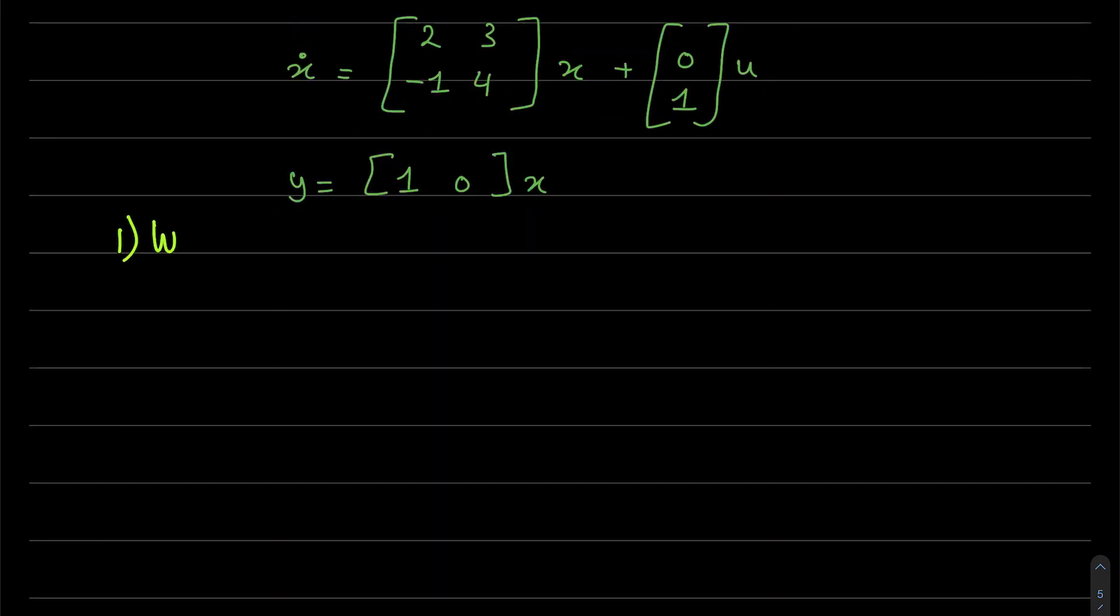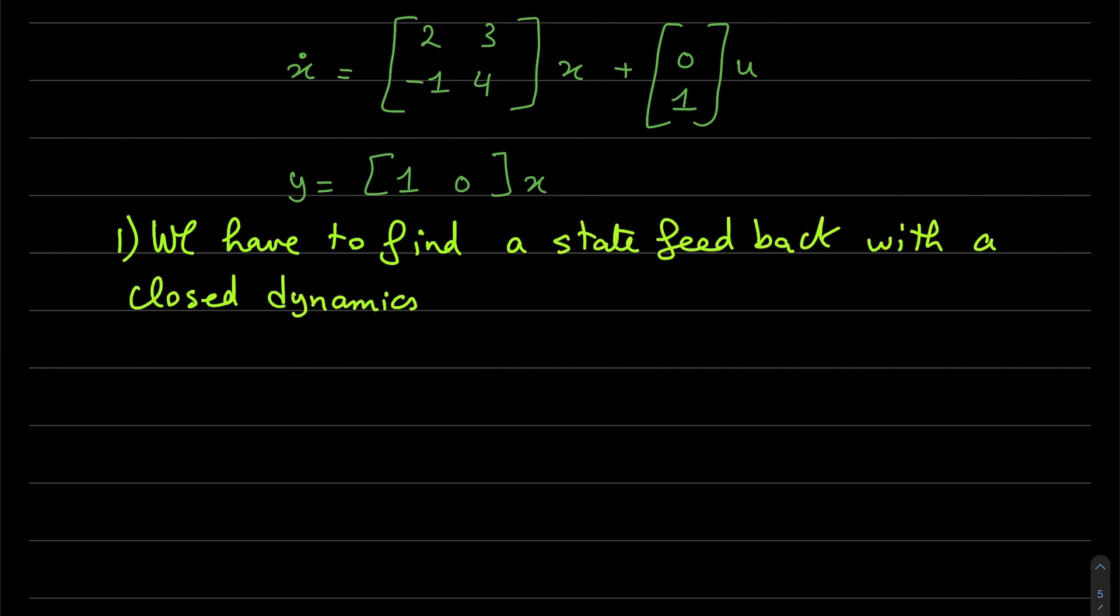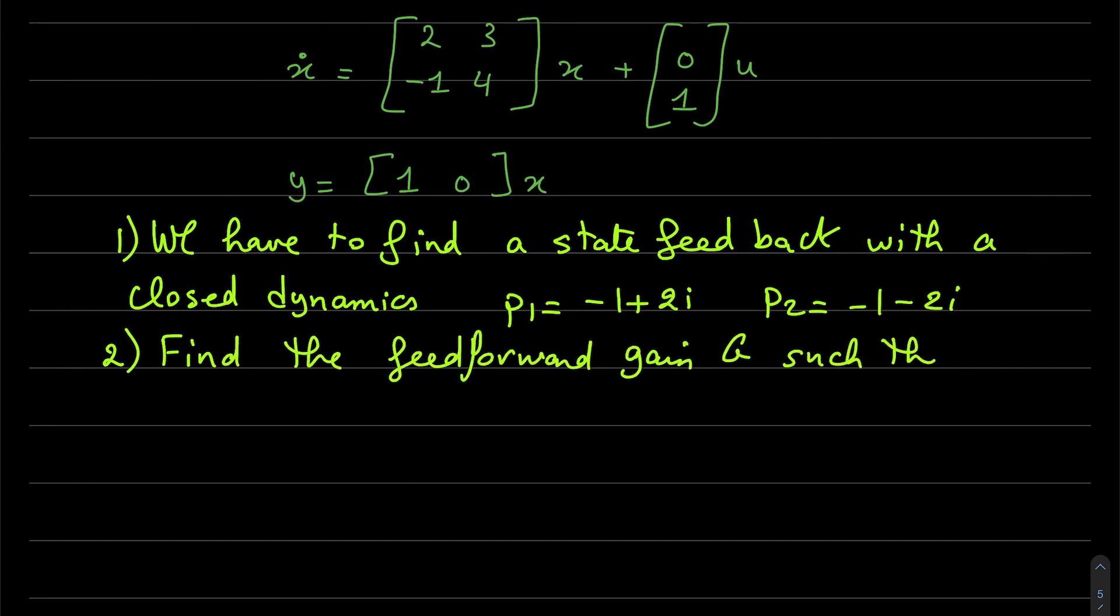Let us return to the example. We have to find a state feedback control with closed dynamics given by these poles, p1 and p2. And in addition, we have to find the feedforward gain such that we have a unitary gain in closed loop.